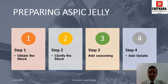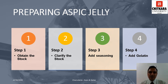Once the stock is ready, the next step is the clarification of stock. To clarify the stock, one has to create a clarification forcemeat by combining very lean ground meat, vegetables and egg whites. In a tall narrow kettle, bring the stock to a simmer and incorporate the clarification forcemeat into it by tempering it with the hot stock.